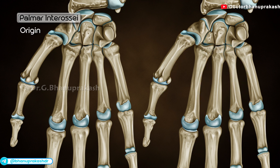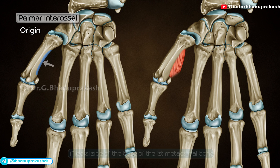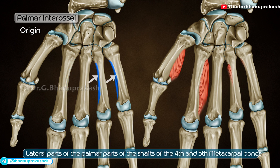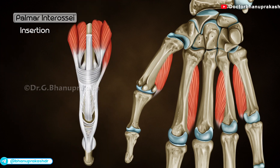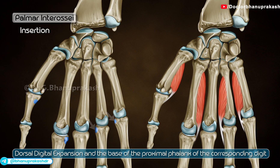Origin: The first one originates from the medial side of the base of the first metacarpal bone. The second from the medial half of the palmar part of the second metacarpal bone. The third and fourth from the lateral parts of the palmar parts of the shafts of the fourth and fifth metacarpal bones. The insertion is at the dorsal digital expansion and the base of the proximal phalanx of the corresponding digit.